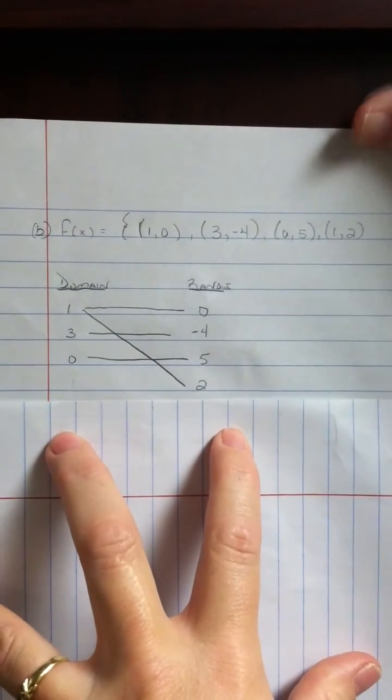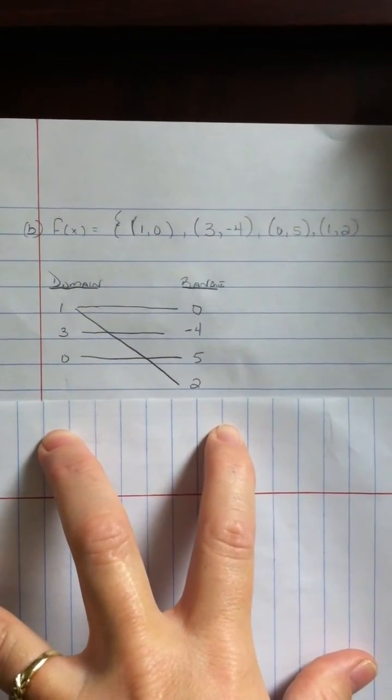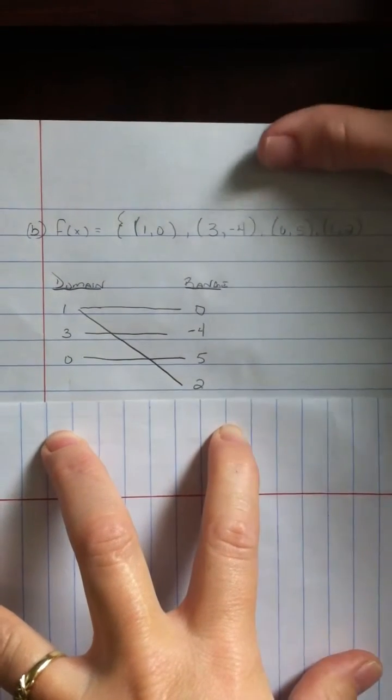As you plot them out, they are also not a one-to-one because you have the 2 and 0 from the range going to 1 in the domain.